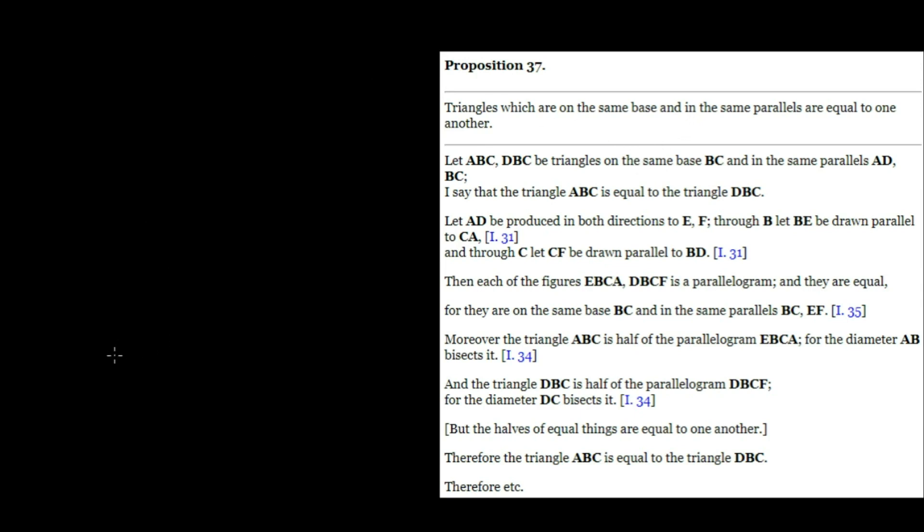So let ABC and DBC be triangles on the same base, BC. So this will be the common base, BC, and in the same parallels, AD and BC.